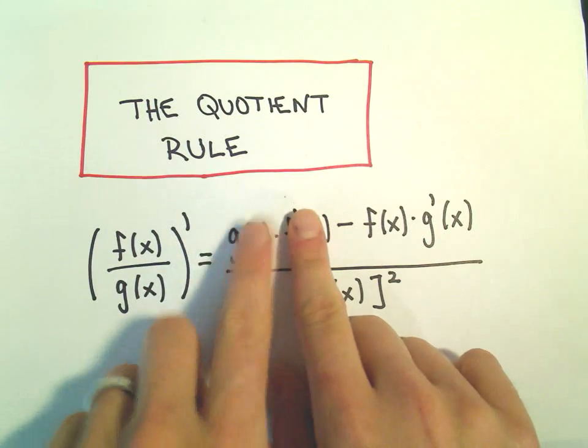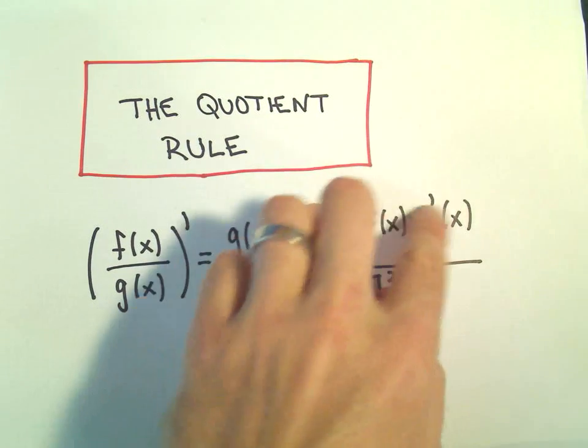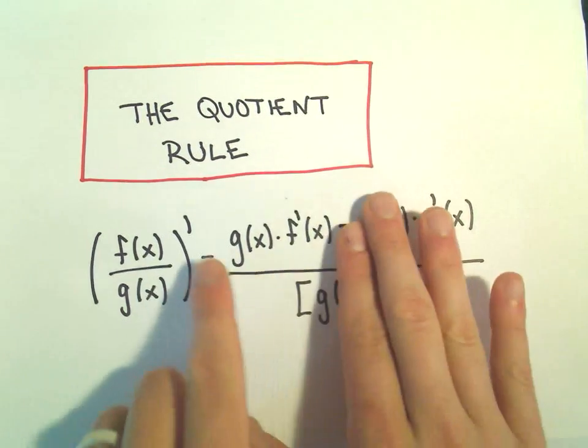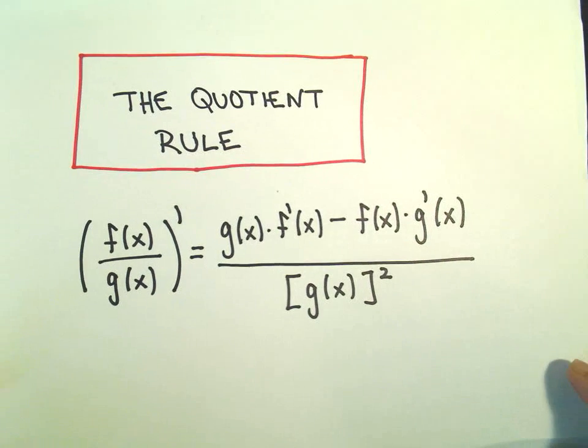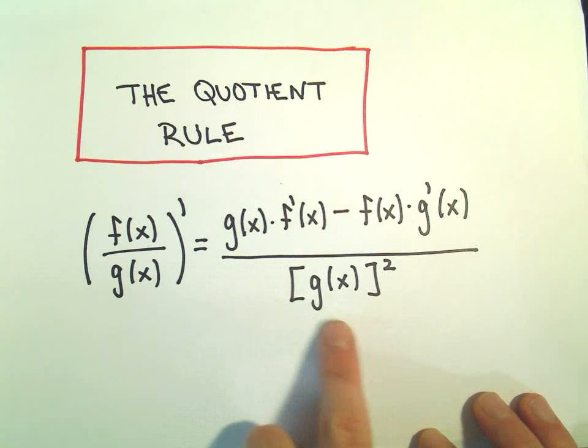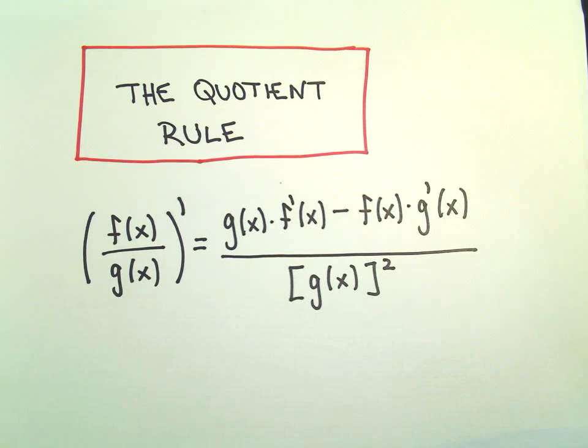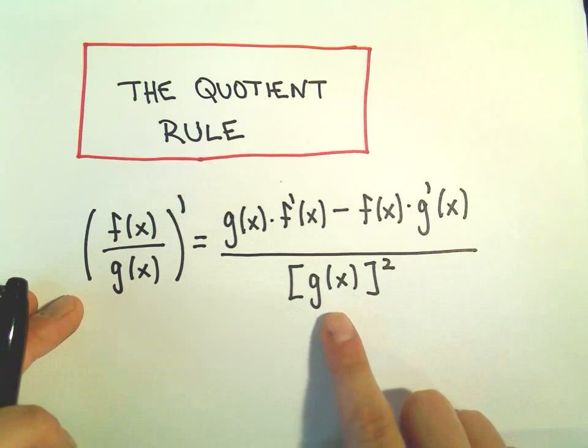But you can't do f of x times g prime of x first and then subtract away this part. That part you do have to be careful about, so just a little word of warning there. And then it says we divide over whatever's in the denominator and we square that. No derivative when we do this part.